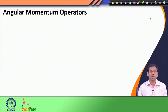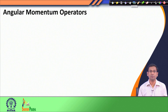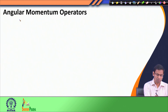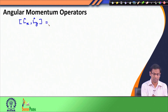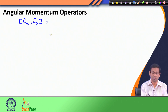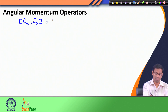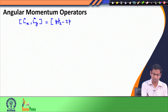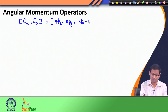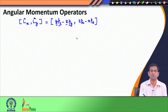Before we do that, we first discuss one of the very important properties of angular momentum — that they follow a particular set of commutation rules. We will first discuss what is the commutator between the Lx operator and the Ly operator. Lx is y·pz − z·py and Ly is z·px − x·pz. Now, y, pz, z, py are all operators, and so each term in this expression is an operator.